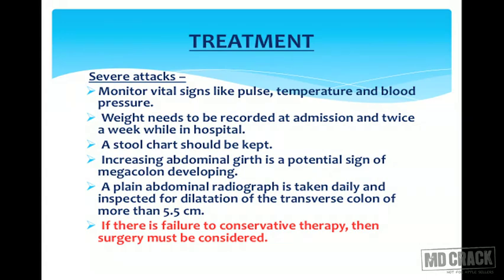In a severe attack, the patient must be admitted to the ward to monitor vital signs including pulse, temperature, and blood pressure. Weight should be recorded at admission and twice a week. A stool chart should be kept. Increasing abdominal girth is a potential sign of developing megacolon. A plain abdominal radiograph is taken daily and inspected for dilation of the transverse colon more than 5.5 cm. If there is failure of conservative therapy, only then should surgery be considered.